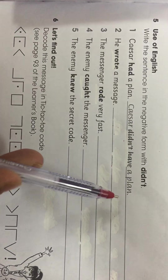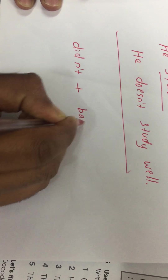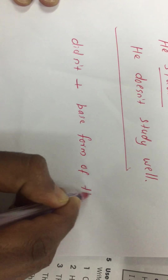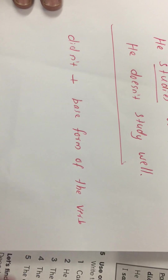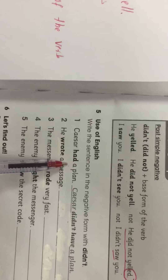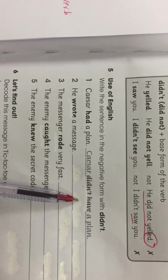Let's check the answers to the questions. Caesar had a plan — the negative is: Caesar didn't have a plan. The structure is: didn't + base form of the verb. 'Have' is the base form — 'had' is the past form. So: Caesar had a plan → Caesar didn't have a plan.